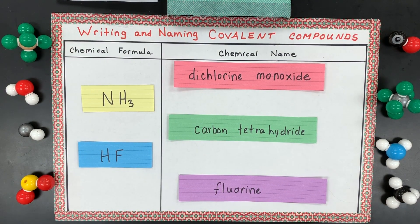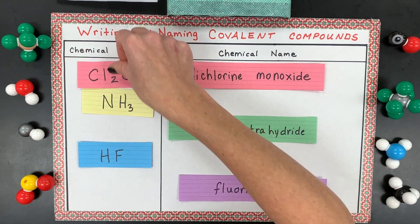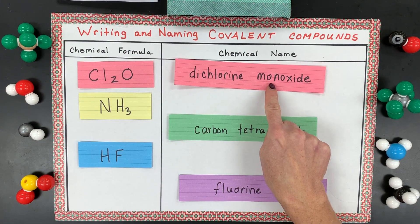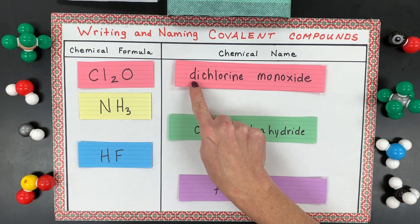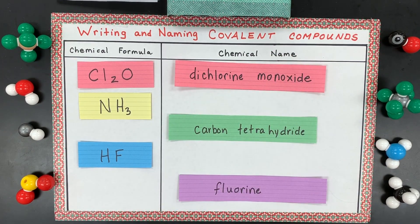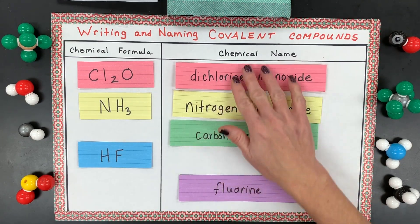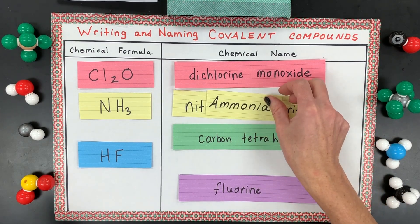Here's our last set of examples. The first formula to write is Cl2O, so it's called dichlorine monoxide — we always need a prefix for the second element, and use 'di,' 'tri,' et cetera if you have more than one of the first element. Then there's nitrogen trihydride, which you might also recognize by its common name: ammonia.